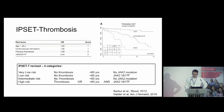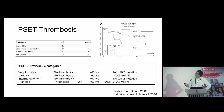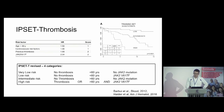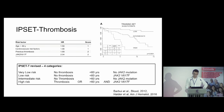In ET, there is a widely used scoring system to assess thrombosis risk — the International Prognostic Score of Thrombosis, or IPSET-T Score. Initially developed around 10 years ago, it separated patients into three risk groups — low, intermediate, and high — incorporating age, cardiovascular risk factors, previous thrombosis, and presence of the JAK2 mutation. This score was revised in 2016 following re-analysis of the same IPSET dataset, and now separates patients into four groups including a very low risk group — patients with no previous thrombosis, aged under 60, and without the JAK2 mutation. Notably, the revised scoring system no longer includes the presence of cardiovascular risk factors.